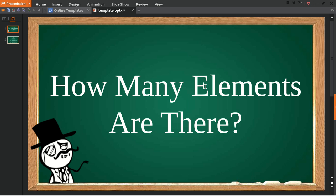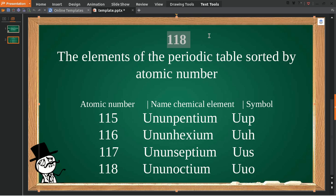Elements like carbon monoxide, hydrogen, and oxygen - there are many of them in the periodic table. So how many elements are there in the periodic table? There are 118 elements in the periodic table.